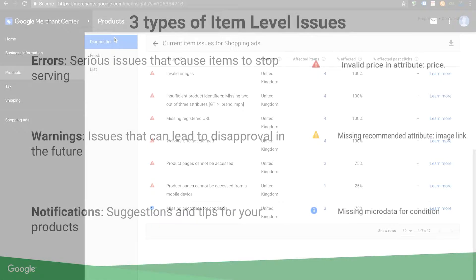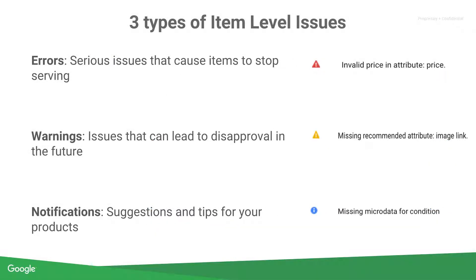These issues are divided into three types: errors, warnings, and notifications. Errors are serious issues and lead to disapprovals, which stops the items from serving. Warnings are issues that are likely to cause disapprovals in the future if they are not fixed. Lastly, notifications exist to highlight recommendations and optimization suggestions for your items.